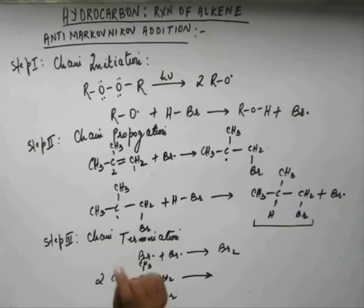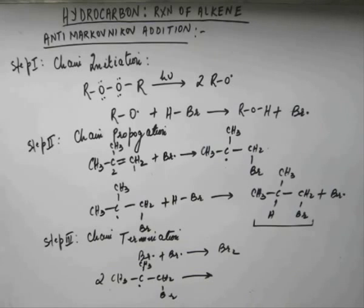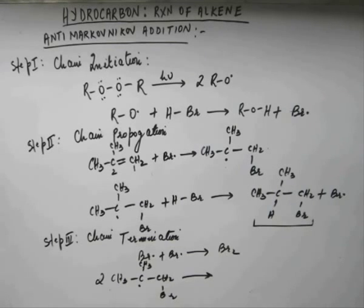I have deliberately taken HBr in this reaction and not HX in general. HF doesn't show addition reactions anyway. HCl and HI show Markovnikov addition in normal reactions, but in this case there will be no peroxide effect — in other words, there will be no anti-Markovnikov addition with HCl or HI. You must remember that the peroxide effect occurs only in the case of HBr.